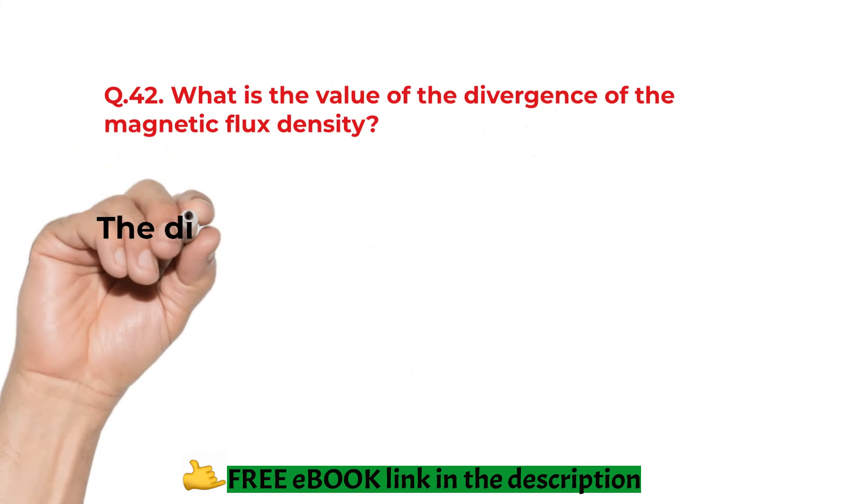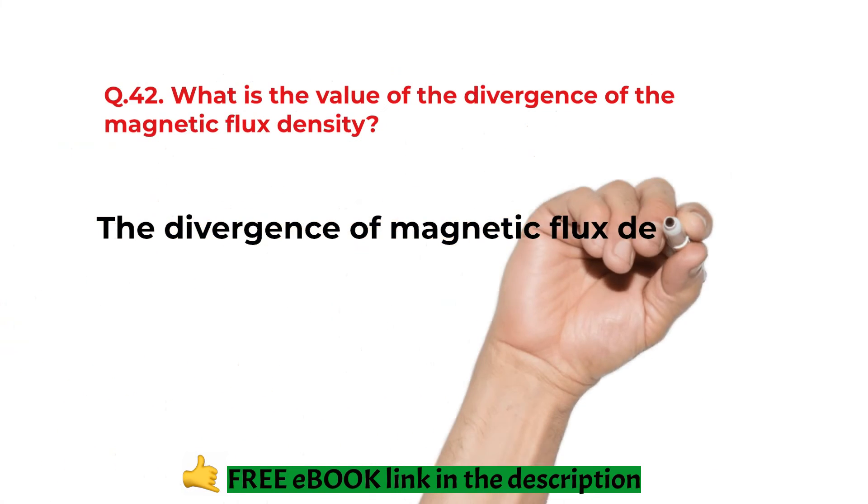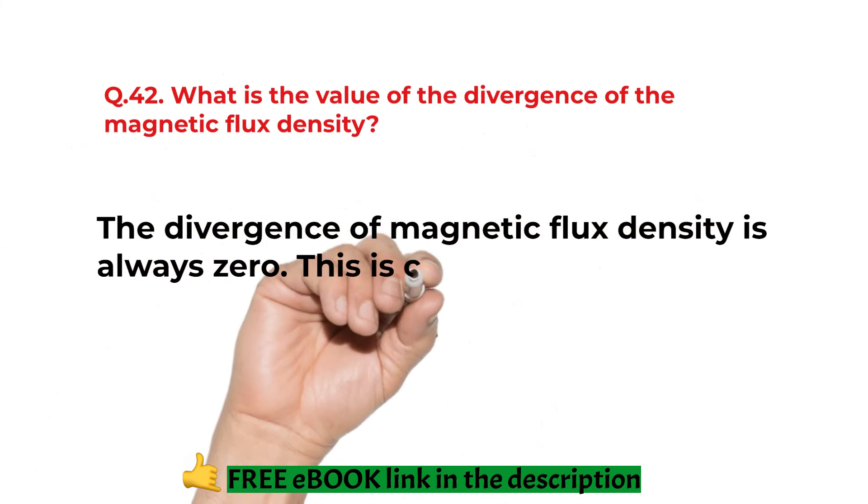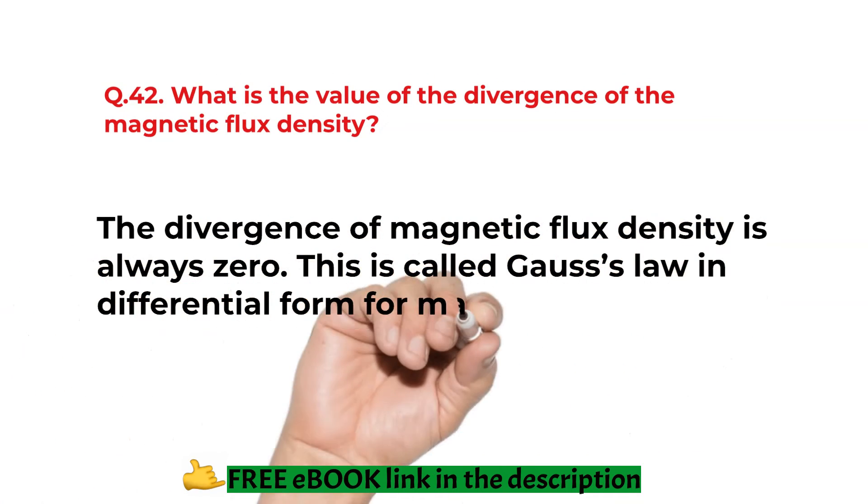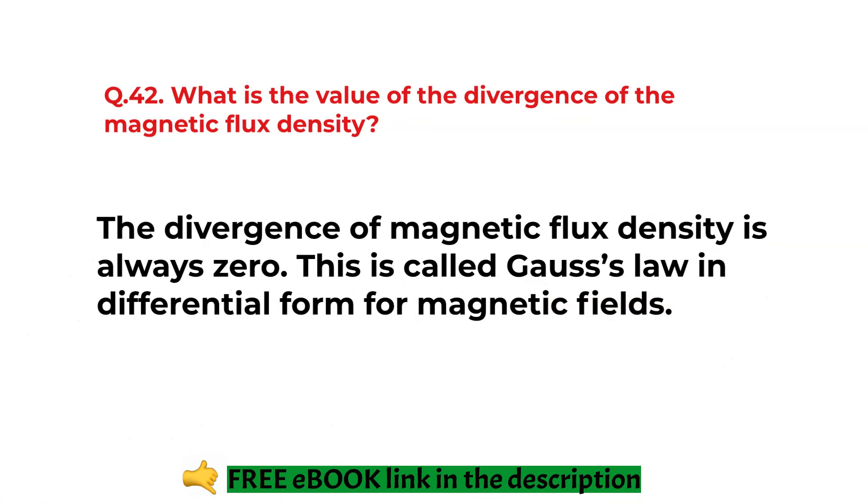What is the value of the divergence of the magnetic flux density? The divergence of the magnetic flux density is always zero. This is called the Gauss law in differential form for the magnetic fields.